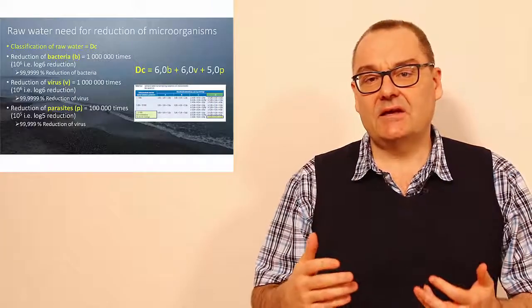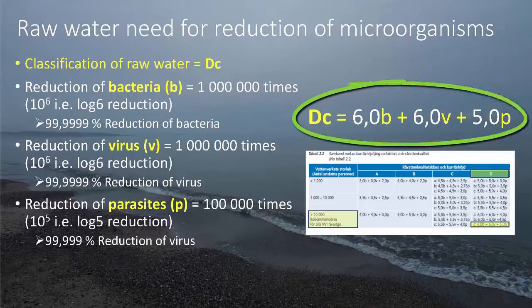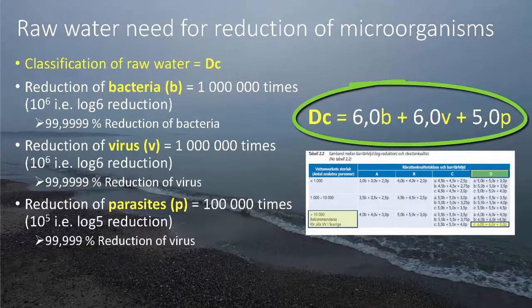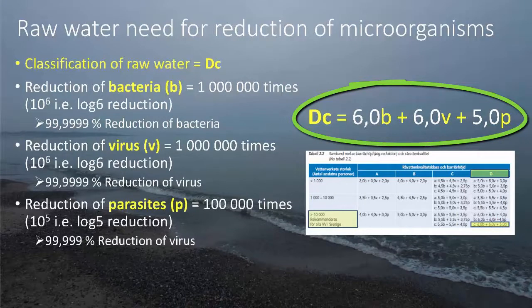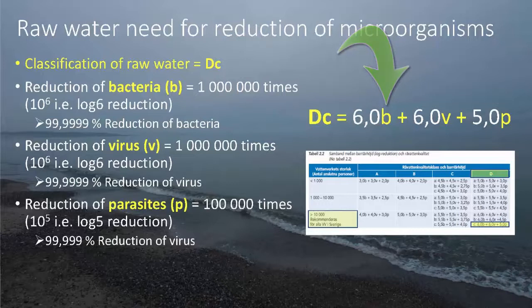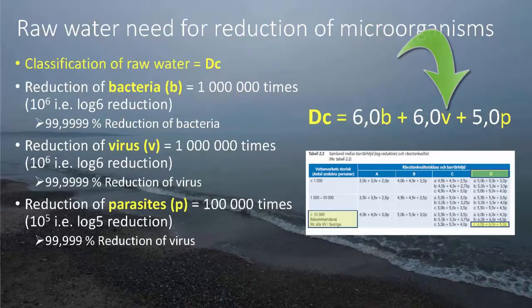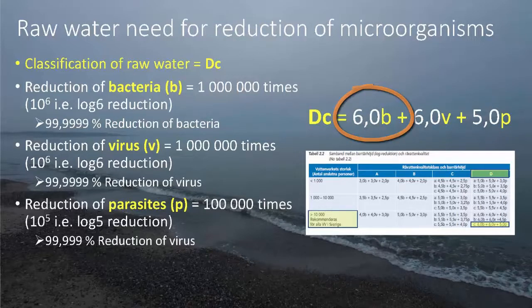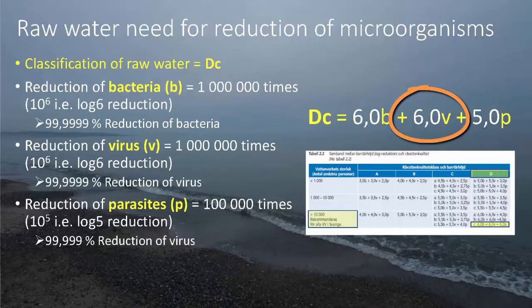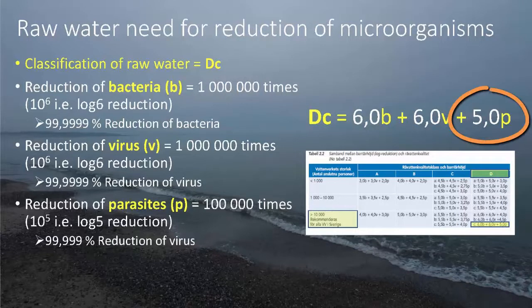First let's look at this equation which says DC equals 6B plus 6B plus 5P. To start the explanation of this equation the B stands for bacteria, the V stands for virus, the P for parasite. And this 6B, 6V and 5P is 6 log reduction. So the equation will tell us that 6B means a 6 log reduction of bacteria and a 6 log reduction of virus and a 5 log reduction of parasites.